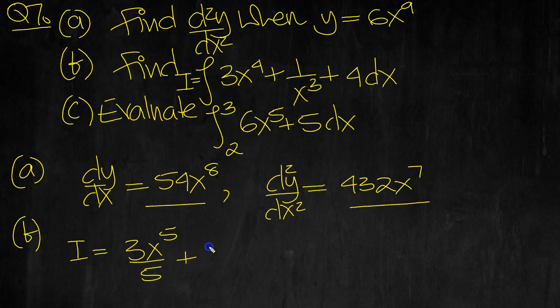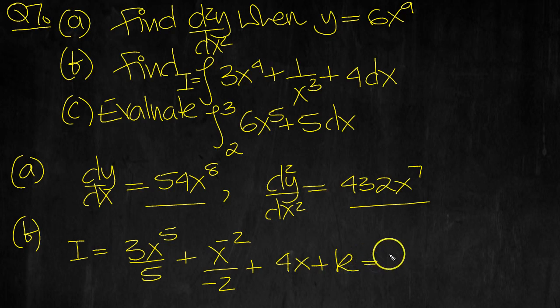this is x to the minus 3, so raise the power by 1 to minus 2, divide by that number. Plus, constants integrate to constant times x, plus the constant of integration.